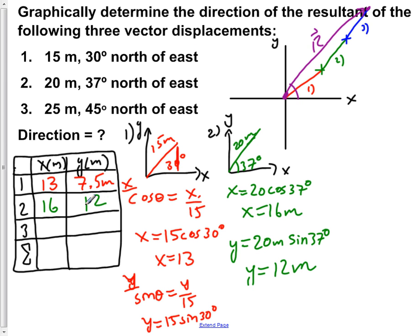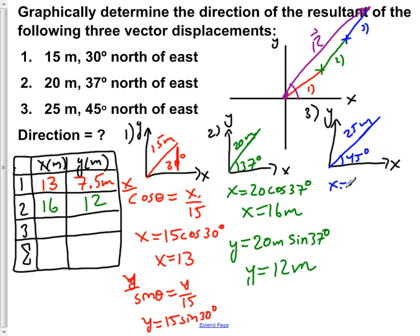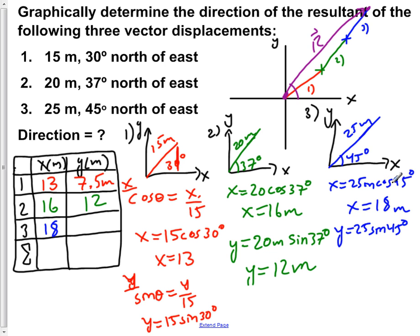For vector 3, which makes an angle of 45 degrees north of east and has a length of 25 meters: x = 25 cos(45°), giving roughly 18 meters. And y = 25 sin(45°), also giving roughly 18 meters. Since sin(45°) and cos(45°) are equal, the x and y components are the same in this case.